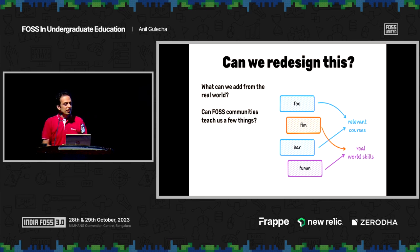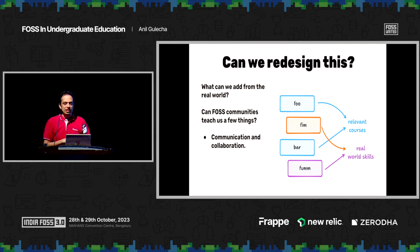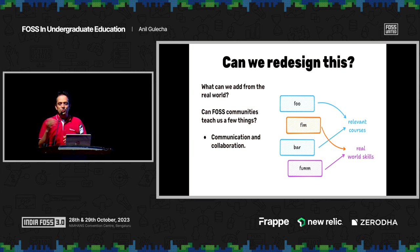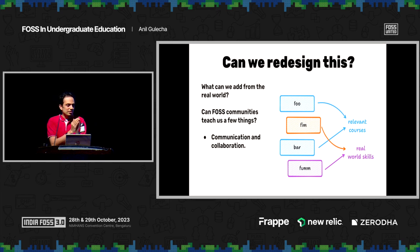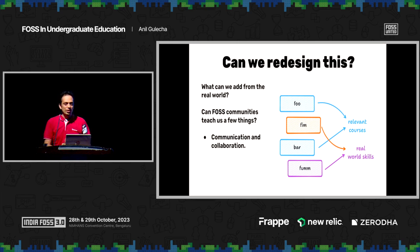What are the kinds of things we can learn from how FOSS projects run? Can communication and collaboration-related skills be right there from the first semester? That's a common refrain. One of the common things called out when that transition happens from a student to the industry is: hey, not all the skills are there. Why are we not really focusing on that in undergraduate computer science?